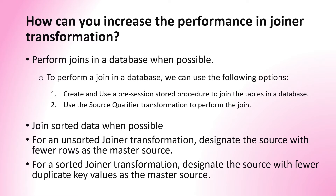The next question is how can you increase performance in joiner transformation. By performing joins in the database we can improve performance, but this is not always possible. It's only feasible when the source tables being joined come from the same database. When tables come from different databases, or when joining a table with a file, it's not possible to perform the join in the database. In that case, you can create a pre-session stored procedure to join the tables, or use an SQL override query in the source qualifier transformation.